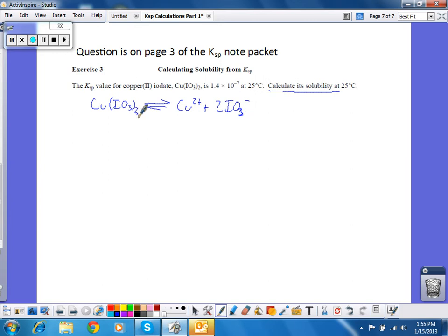Notice I get two IO3s, two iodates for every one copper two. Ksp is 1.4 times 10 to the negative seventh. And that is equal to the concentration of copper two times the concentration of iodate squared.